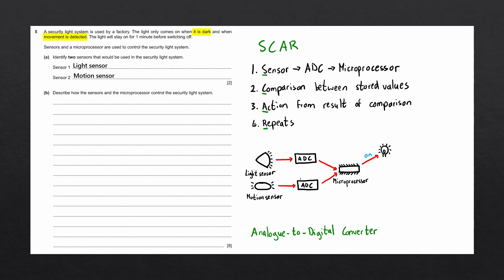The microprocessor will then send a signal to the light bulb to switch it on. The question says that the light will stay on for one minute before switching off. So when the microprocessor sends the signal to the light bulb, it will also send a signal to a timer to begin the one minute countdown.